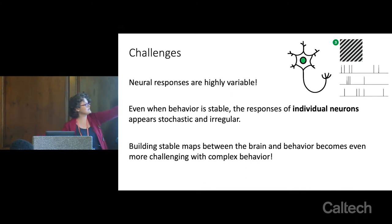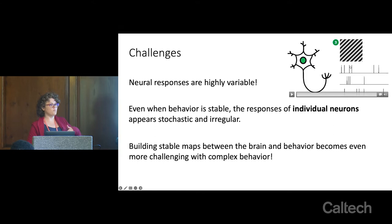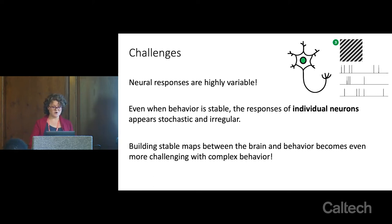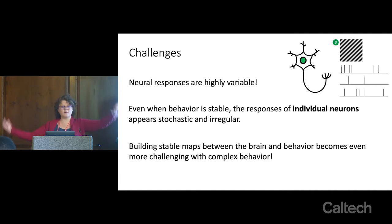This schematic highlights that as we produce or introduce the same stimulus over and over, we might actually see very different neural responses from an individual neuron. And of course, I'm talking about a simple stimulus — so when we talk about complex behaviors, this becomes even more challenging.